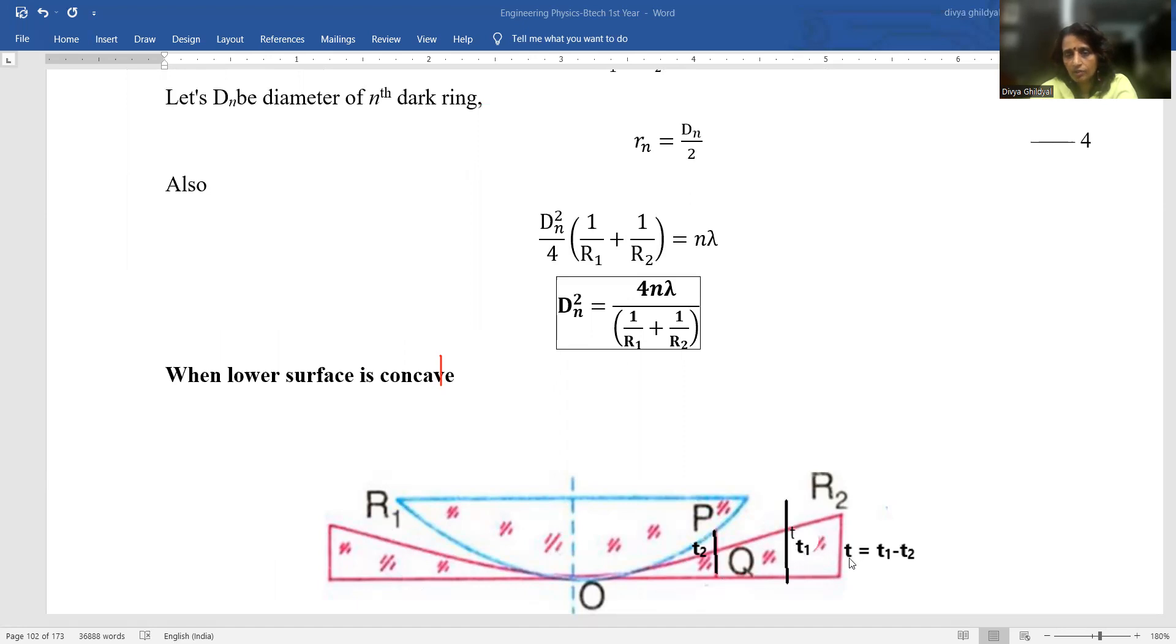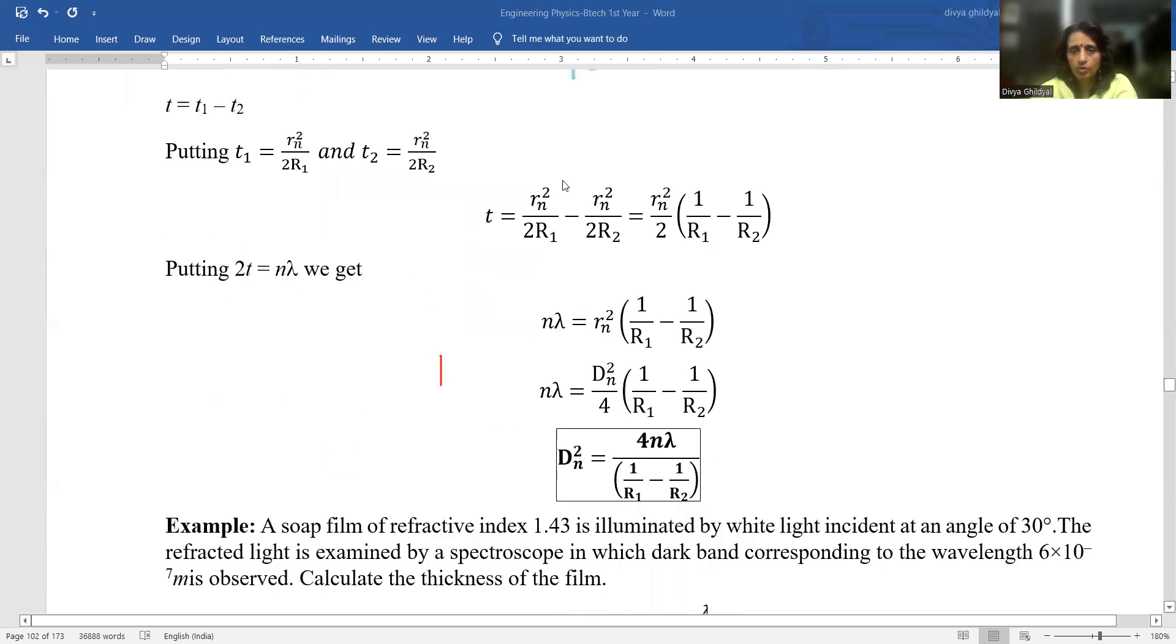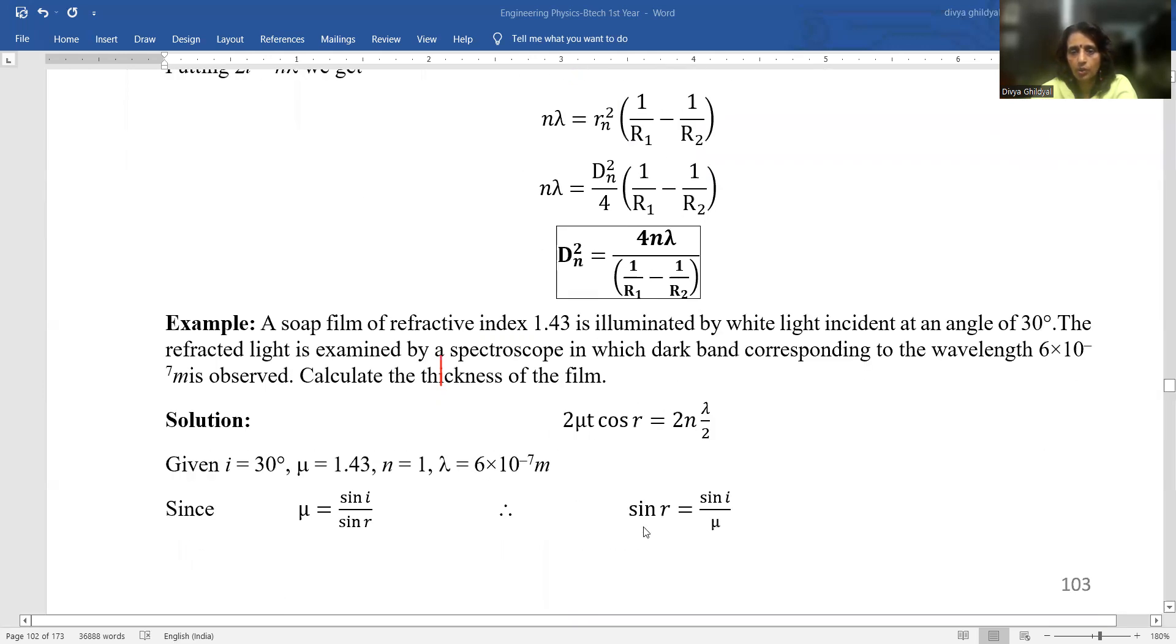And another condition when lower surface is concave and the plano convex lens have been kept like this. Then, in this case, instead of T = T1 + T2, it will be T1 - T2. You get the diameter of Nth ring as 4Nλ/(1/R1 - 1/R2).